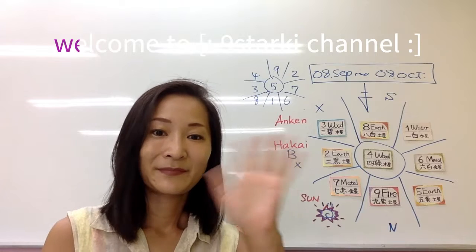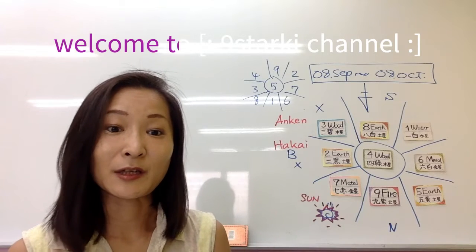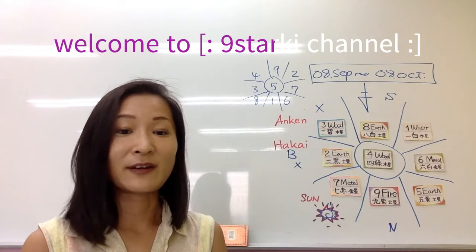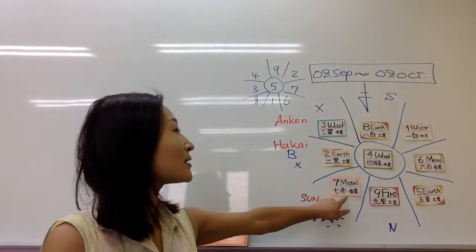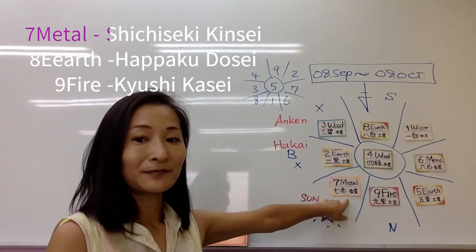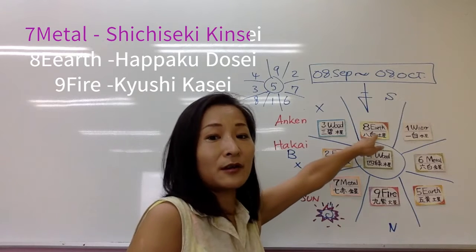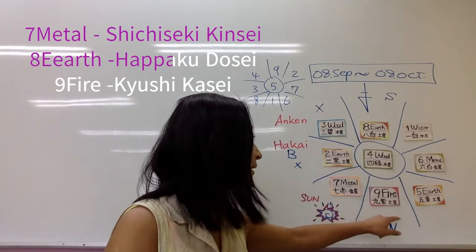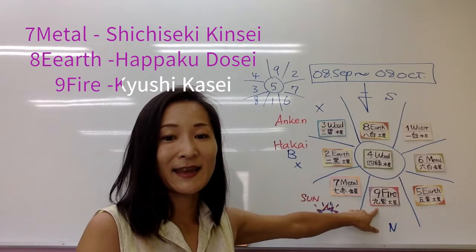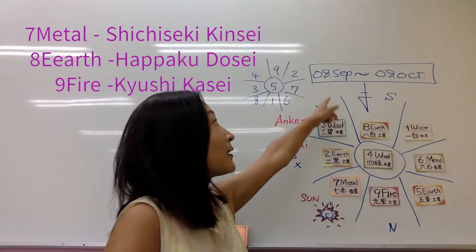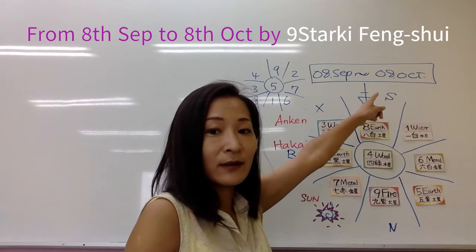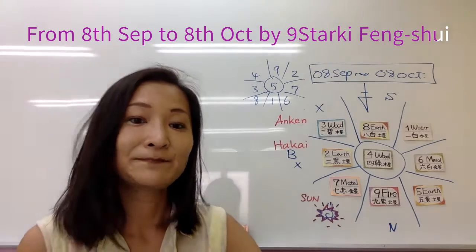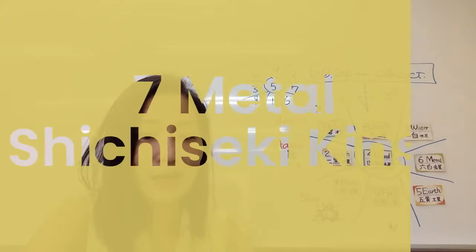Hi! Welcome to my Nurse Daki channel. Today's video is talking about 7 metal, 8 earth Hapaku Dosei, and 9 fire Kyushi Kasei from September 8 to October 8. Astrologic, okay, here we go.